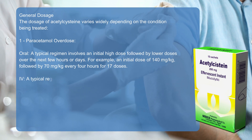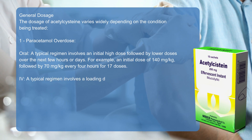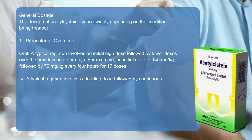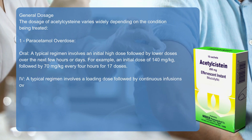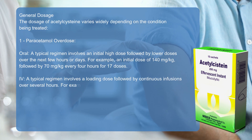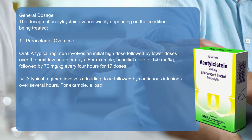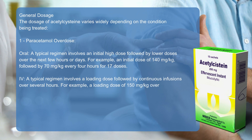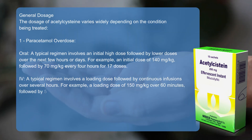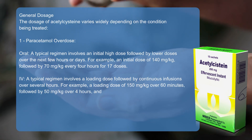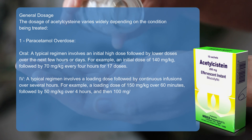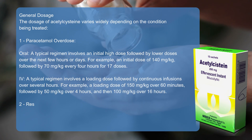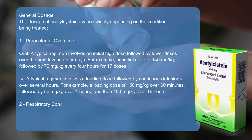In IV form for paracetamol overdose, a typical regimen involves a loading dose followed by continuous infusions over several hours — for example, a loading dose of 150 mg/kg over 60 minutes, followed by 50 mg/kg over 4 hours, and then 100 mg/kg over 16 hours.